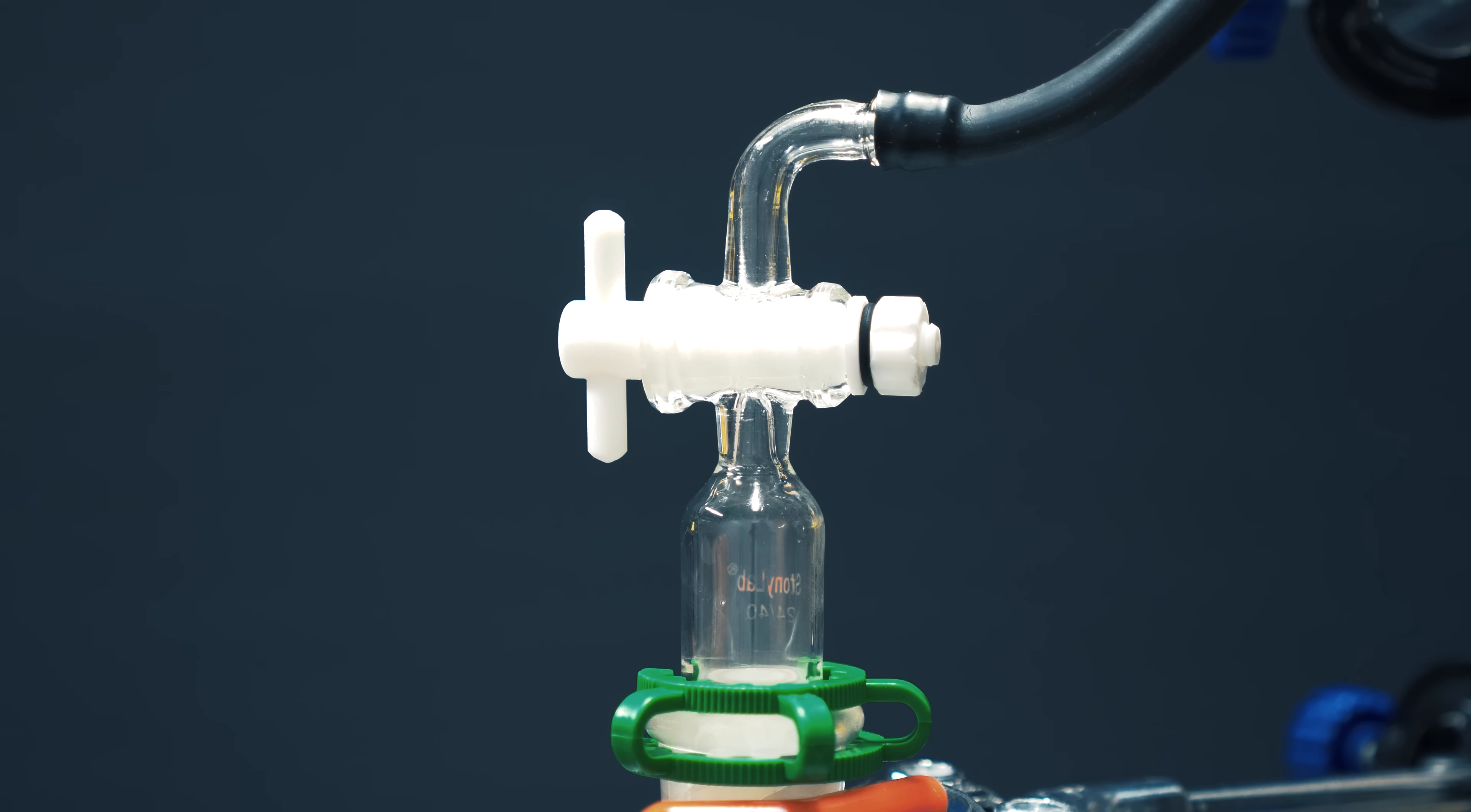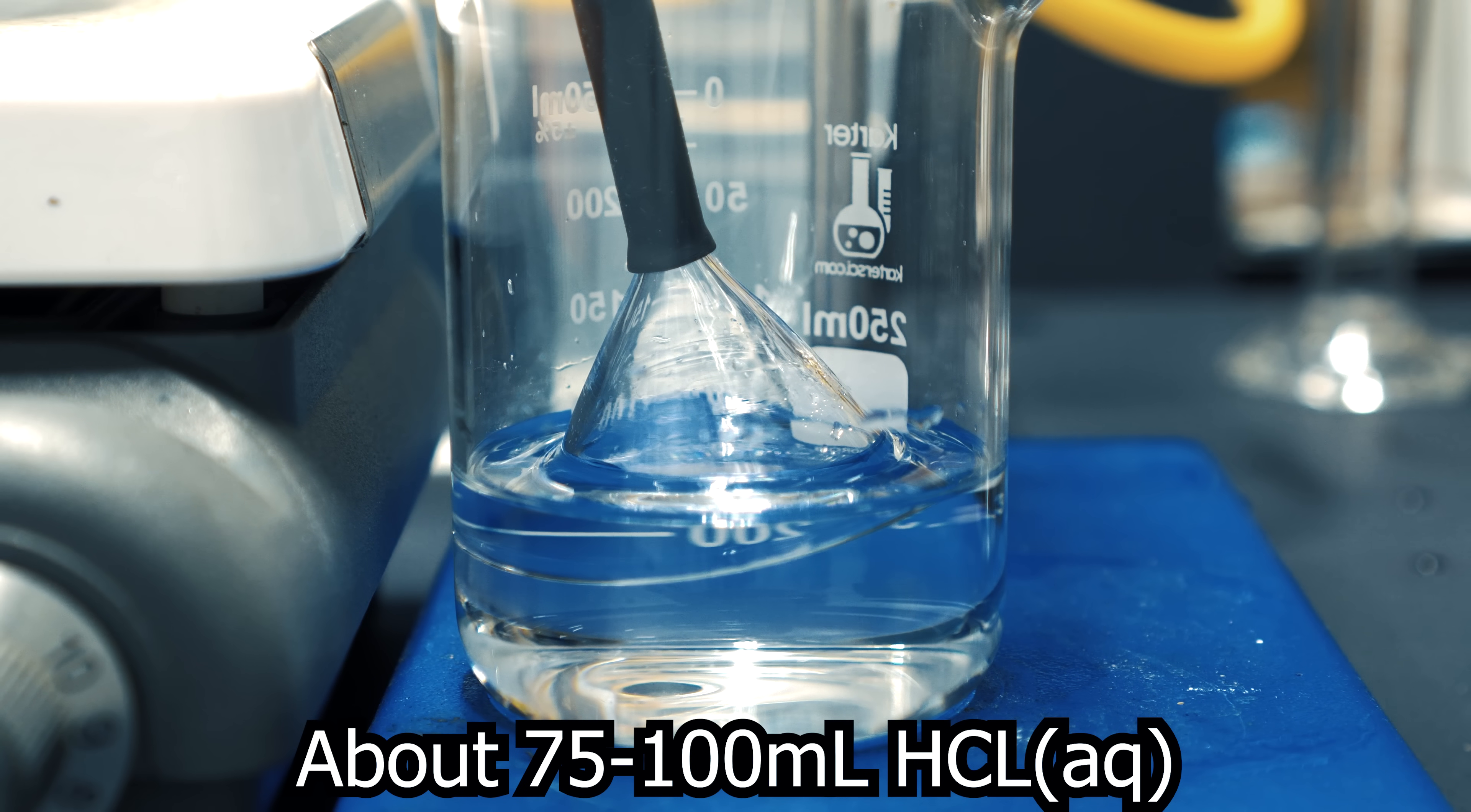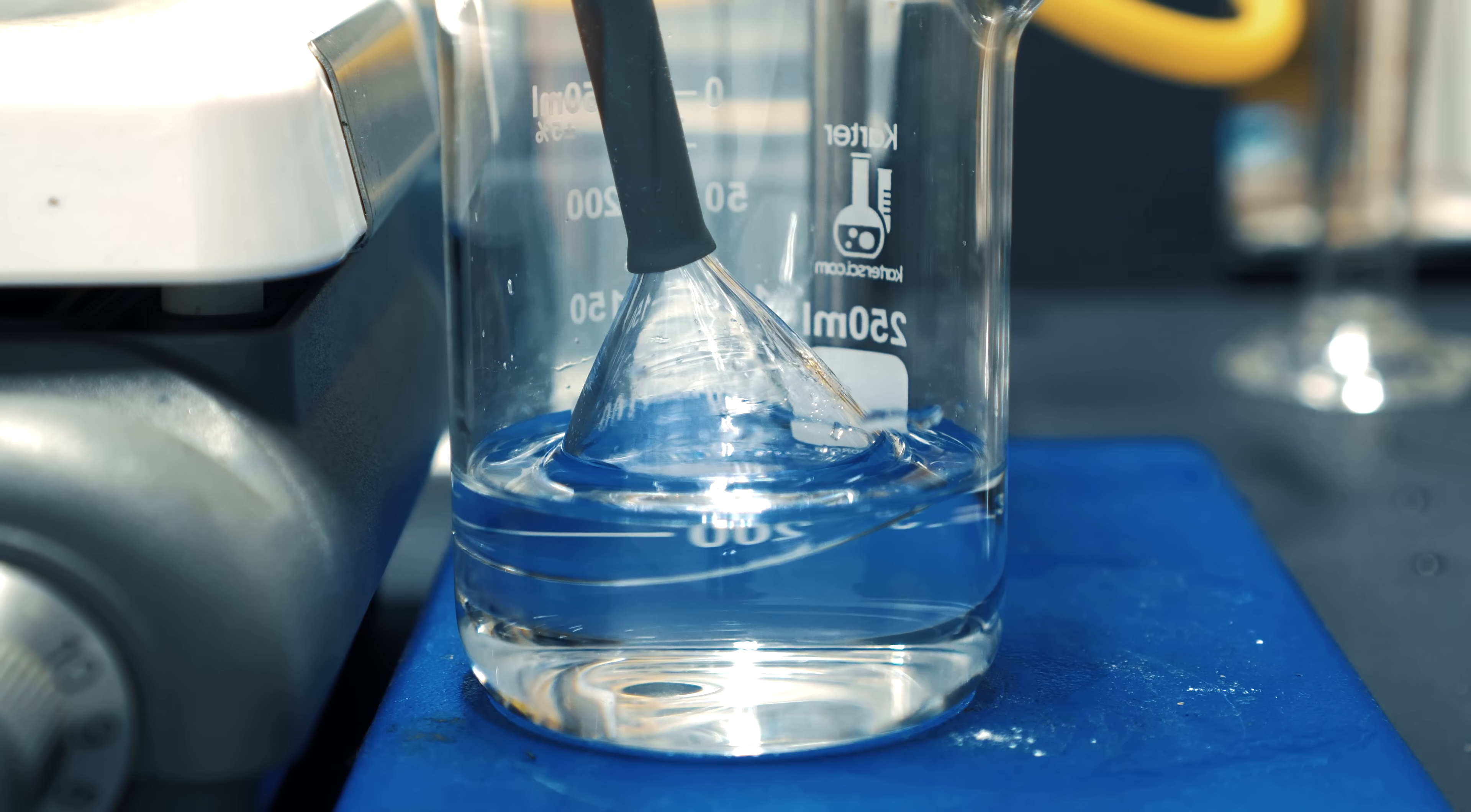I then got ready to bubble my methylamine gas into hydrochloric acid. I used a vacuum control valve with a tube leading out of it. The tube is connected to an inverted funnel and it's lowered into the hydrochloric acid solution.